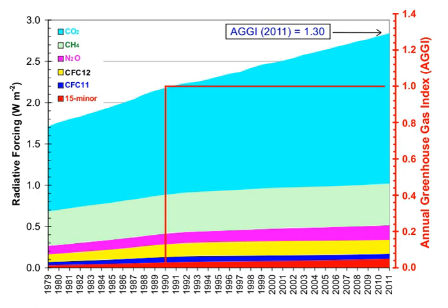The primary greenhouse gases in Earth's atmosphere are water vapor, carbon dioxide, methane, nitrous oxide, and ozone.